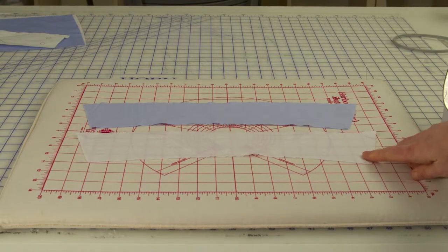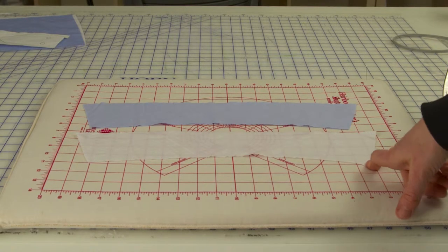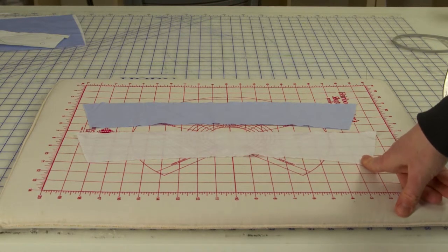So as you can see here, I have a collar for a shirt cut out and I also have the interfacing cut out and ready to go.